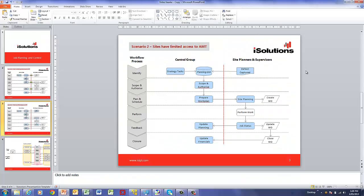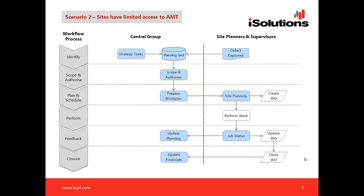Going back to the flow diagram to summarize the process: work identification comes from two sources, the central group scopes and authorizes it, then communicates to sites — most efficiently by the site having AMT access to see what's ready. The site goes through their normal process, and once performed they update the job status and completion date, visible to the central planning group. This also triggers rescheduling of future PM services or component changeouts. That completes this segment.